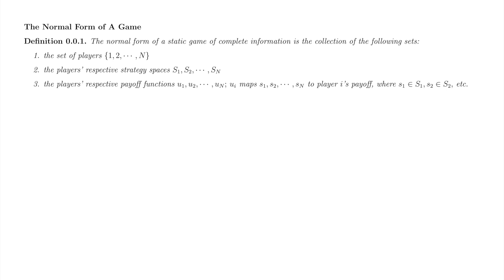The normal form of a static game of complete information is simply a list of all the components of the game, the players, each player's strategy space, and each player's payoff function.